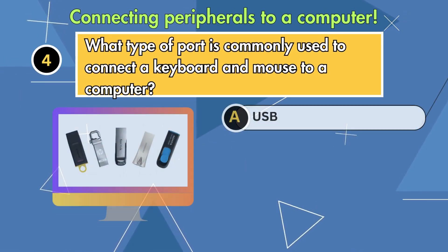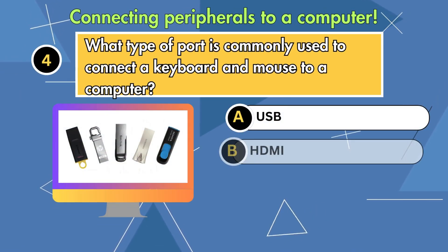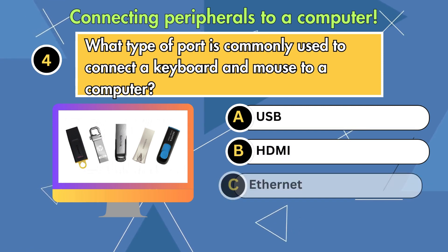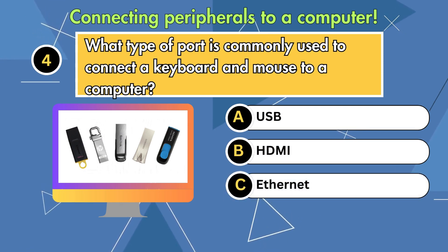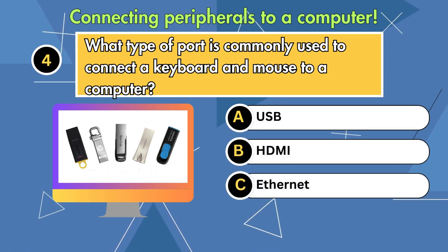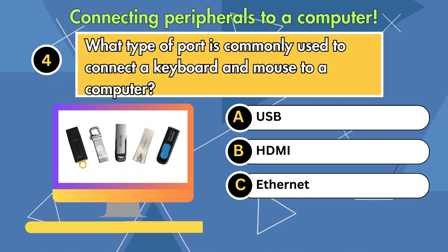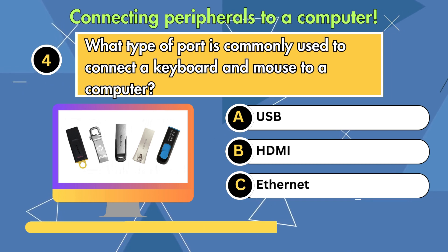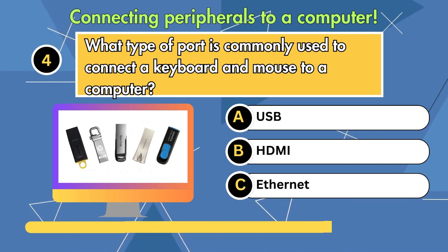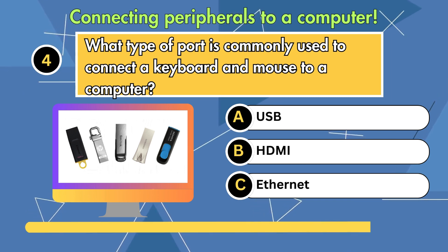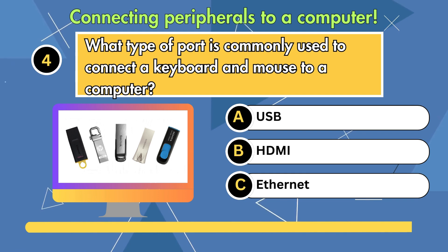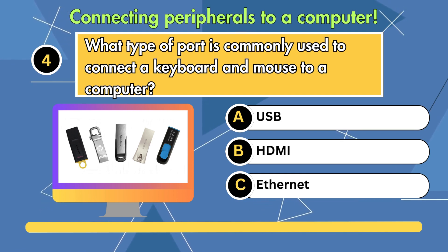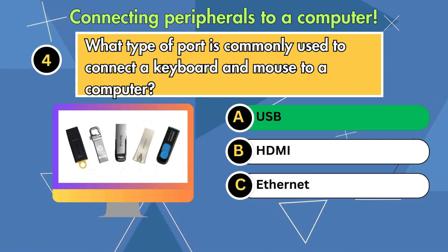What type of port is commonly used to connect a keyboard and mouse to a computer? Option 1: USB. Option 2: HDMI. Option 3: Ethernet. Answer is USB.